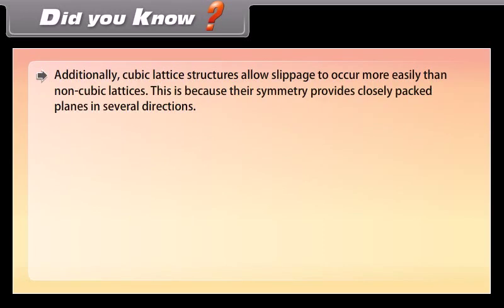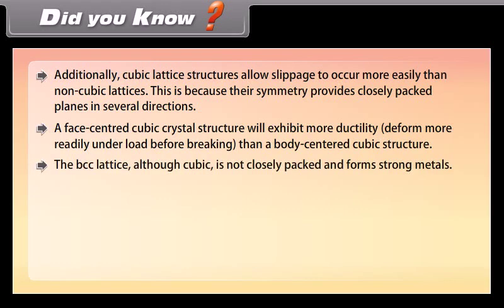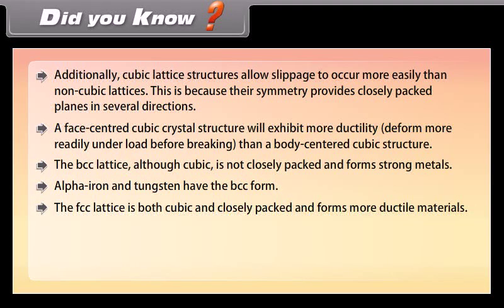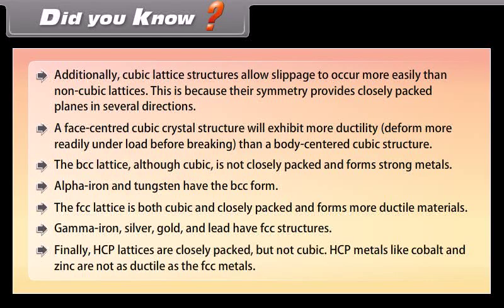Additionally, cubic lattice structures allow slippage to occur more easily than non-cubic lattices. This is because their symmetry provides closely packed planes in several directions. A face centered cubic crystal structure will exhibit more ductility, deform more readily under load before breaking than a body centered cubic structure. The BCC lattice, although cubic, is not closely packed and forms strong metals. Alpha iron and tungsten have the BCC form. The FCC lattice is both cubic and closely packed and forms more ductile materials. Gamma iron, silver, gold and lead have FCC structures. Finally, HCP lattices are closely packed but not cubic. HCP metals like Cobalt and Zinc are not as ductile as the FCC metals.